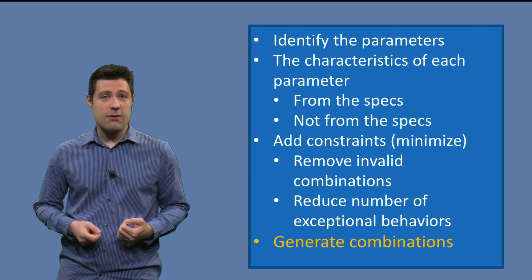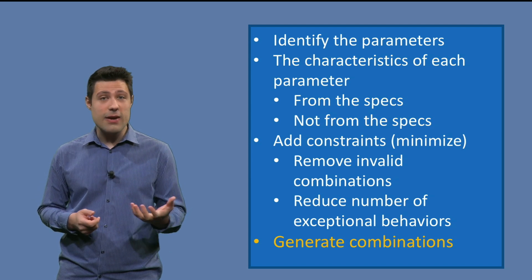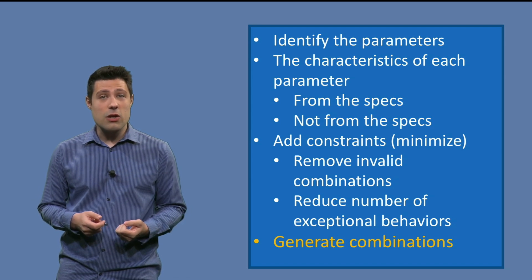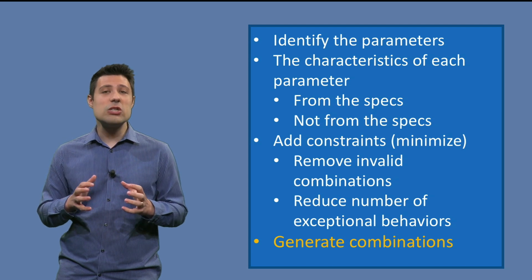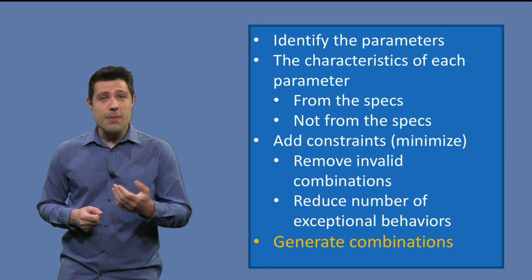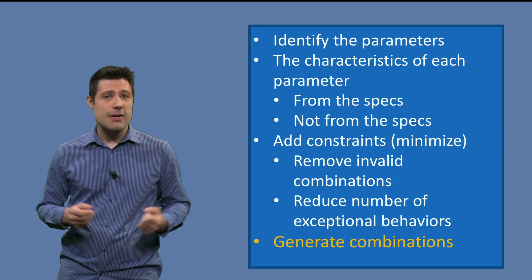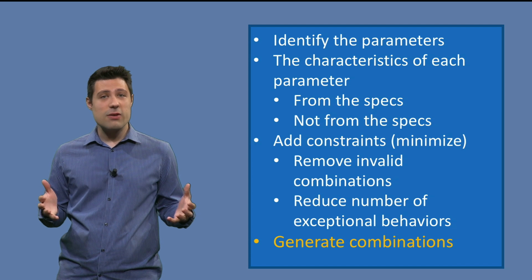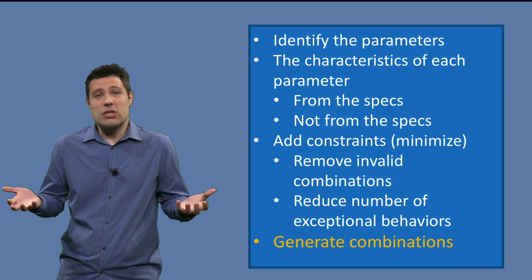As soon as we identify the characteristics of each of the identified parameters, we are then going to combine them all, like in a Cartesian product way, so all the possible combinations. But maybe this number is just too big. The more parameters and characteristics we have, the more combinations we have.